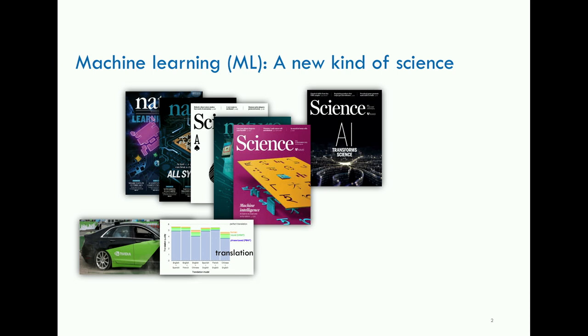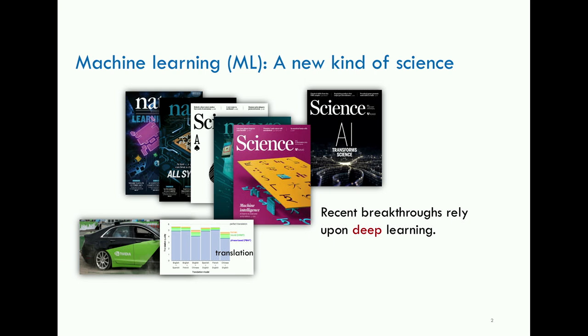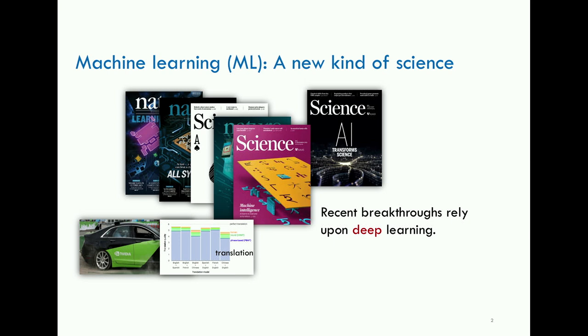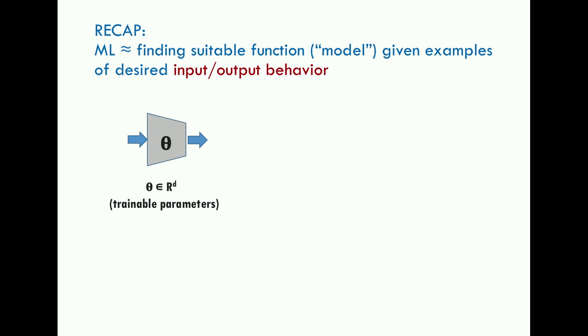I started by describing machine learning as a new kind of science. The breakthroughs in the last eight or nine years have come out of something called deep learning, which we'll talk about more today. Machine learning is phrased as the problem of finding a suitable function or model given examples of desired input-output behavior. This model has tunable parameters denoted by theta.